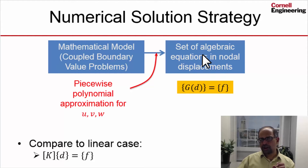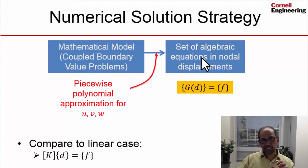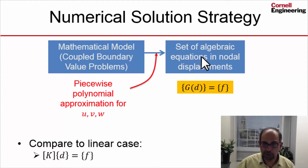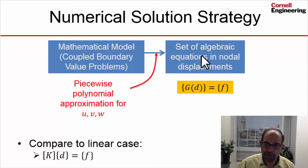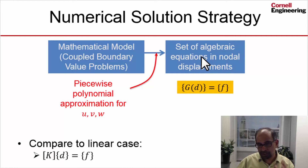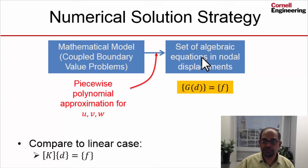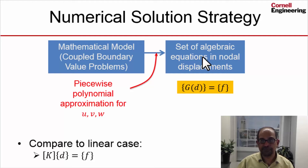There are around 27,000 nodes, and each node has three displacements — three degrees of freedom — so we have a total of around 80,000 degrees of freedom, some of which are known from the essential boundary conditions. So we have around 80,000 algebraic equations to invert, some of which are nonlinear. Let's get the ANSYS solver to form and invert those equations.